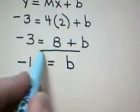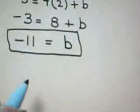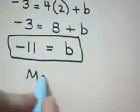Now here's what's really nice. We just found b. We already knew m. m was given to be 4.